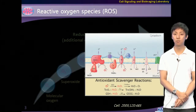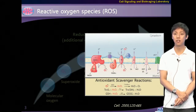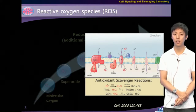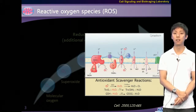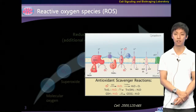The first ROS produced in mitochondria is the highly reactive superoxide anion, and SOD converts this into a much more stable, and therefore relatively inert ROS, hydrogen peroxide. Hydrogen peroxide is reduced to water by many antioxidant enzymes such as catalase, PRX, and GPX.